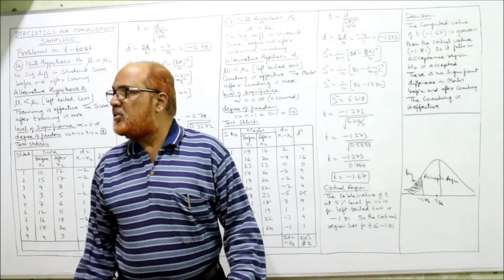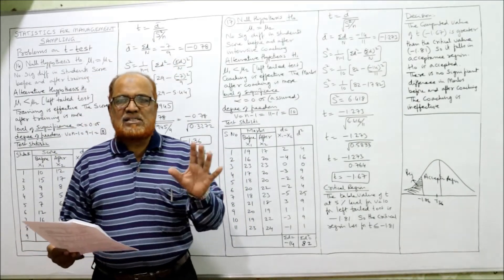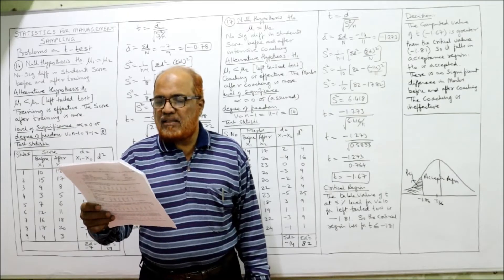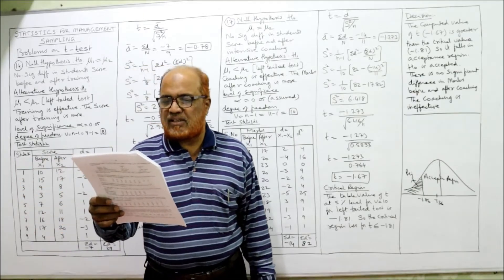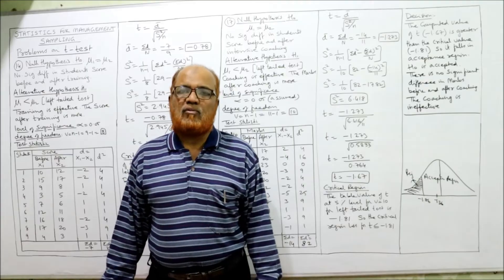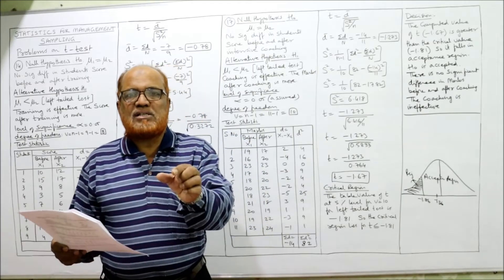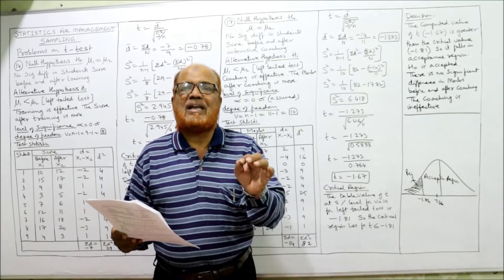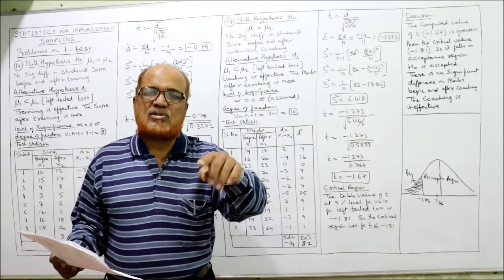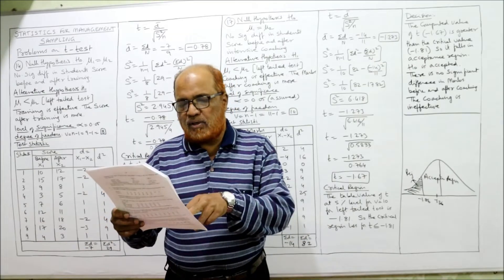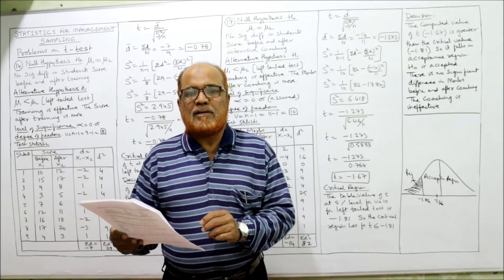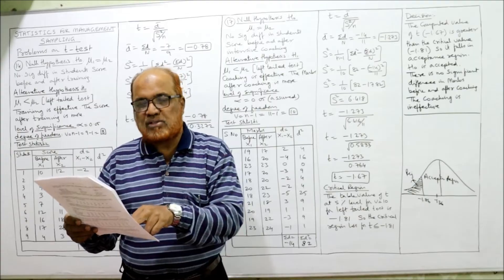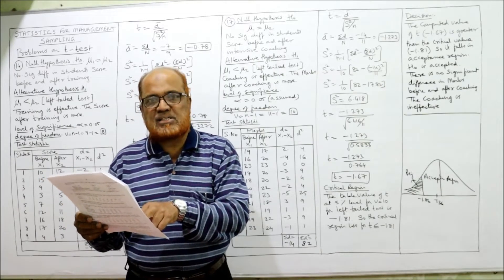This is the end of problem 14. Now the last and final problem on T-test is problem 17. An intensive coaching was given to 11 students and they were examined twice in a month. We want to state whether the coaching is effective or not. The first student scored 19 before coaching and 17 after; the second student scored 16 before and 20 after; the third student scored 23 before and 23 after — no change.